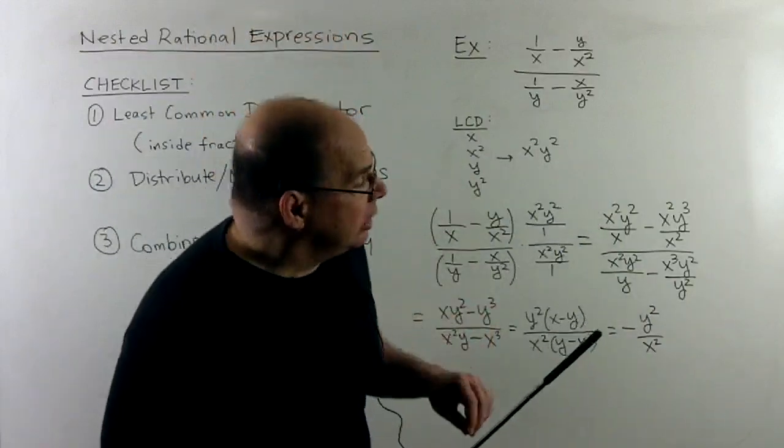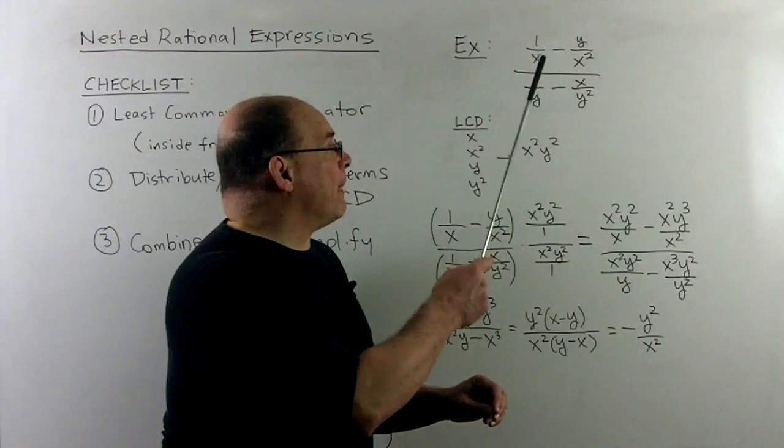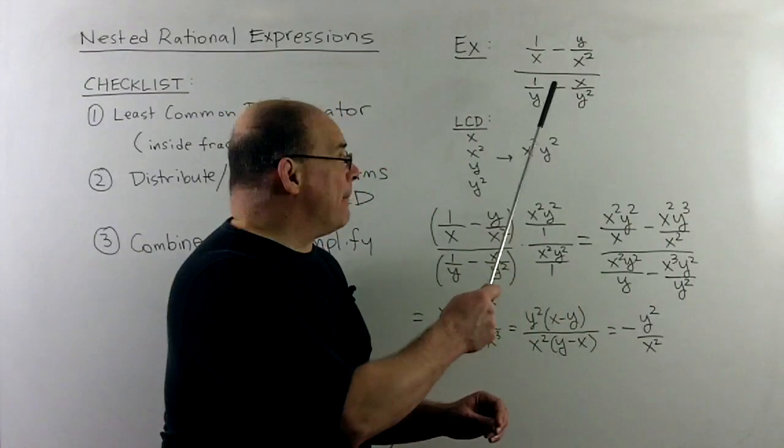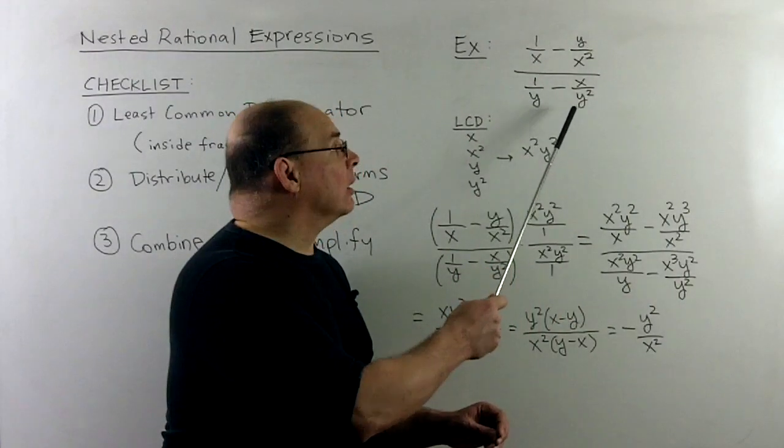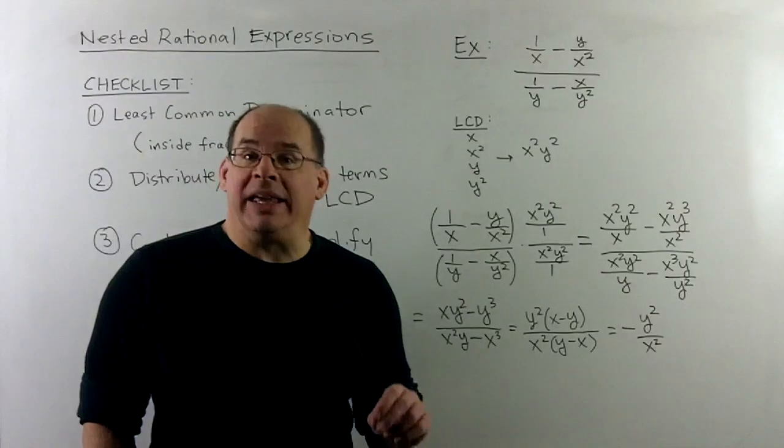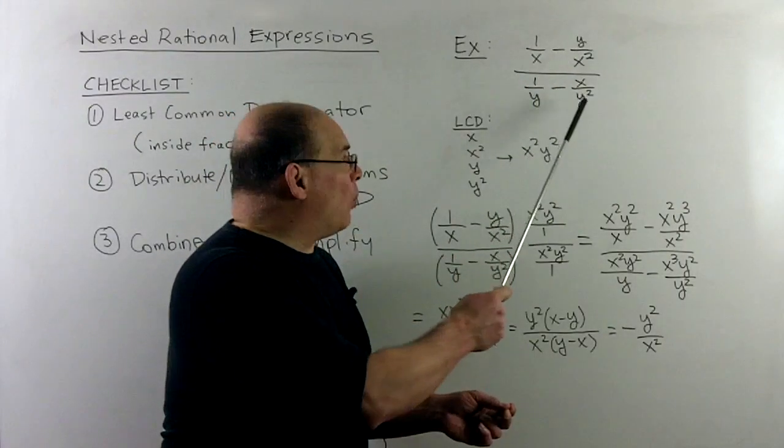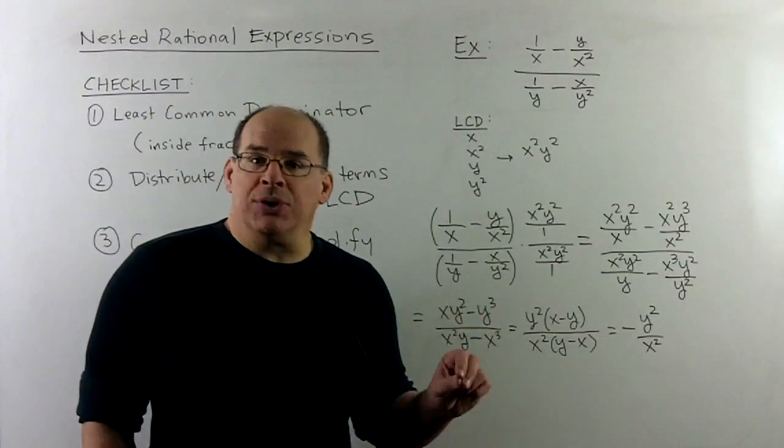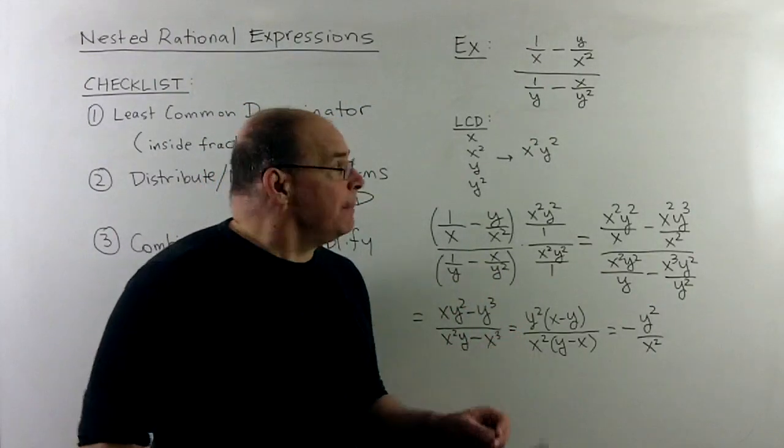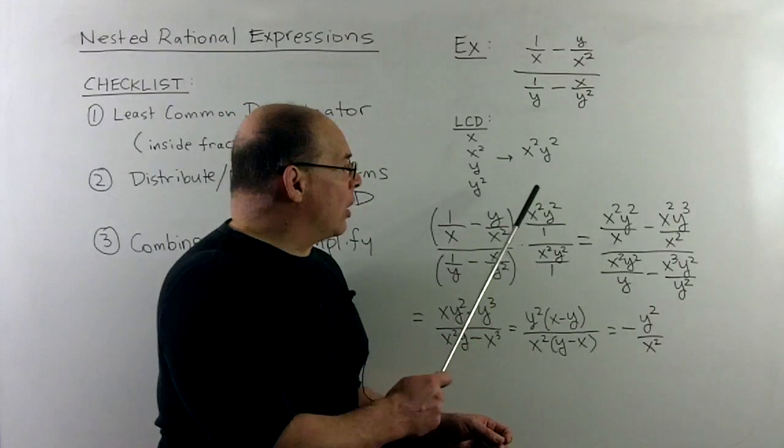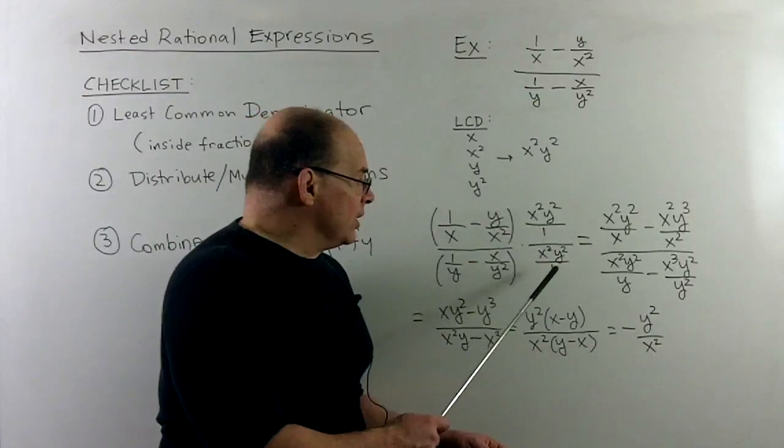Now, as an example, let's try 1 over x minus y over x squared, and then that's over 1 over y minus x over y squared. We look at all the inside denominators. So we'll have x, x squared, y, y squared. They roll up to x squared, y squared for an LCD. And then we're just going to multiply by x squared, y squared over 1 over itself.